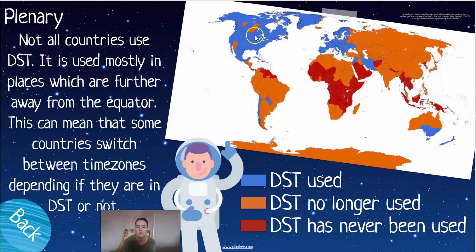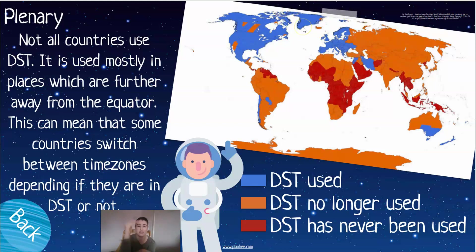Looking at the map, these color codes show which countries actually use daylight saving time. Countries that sit right on the equator don't use it at all, since they experience a very similar length of days all year round. Countries further away from the equator in different hemispheres do tend to use it, though some have changed their approach depending on their time zones.